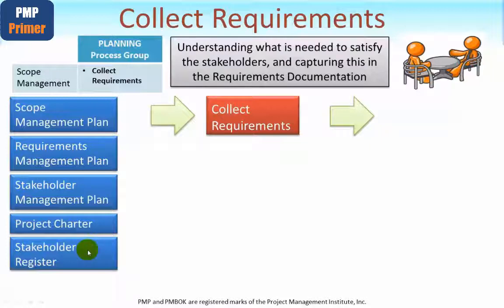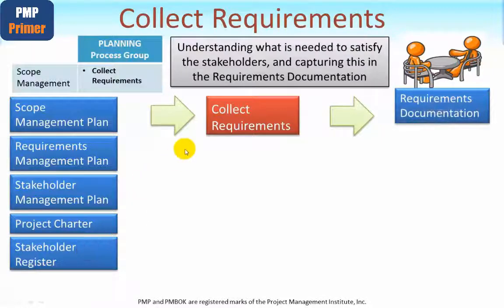It is absolutely vital that we involve the correct stakeholders, because if partway through the project we discover we spoke to the wrong people, that would be an absolute project disaster. The main output here is the requirements documentation, laying out precisely what needs to be delivered and why each particular requirement is important. We'll look at this document in more detail shortly.